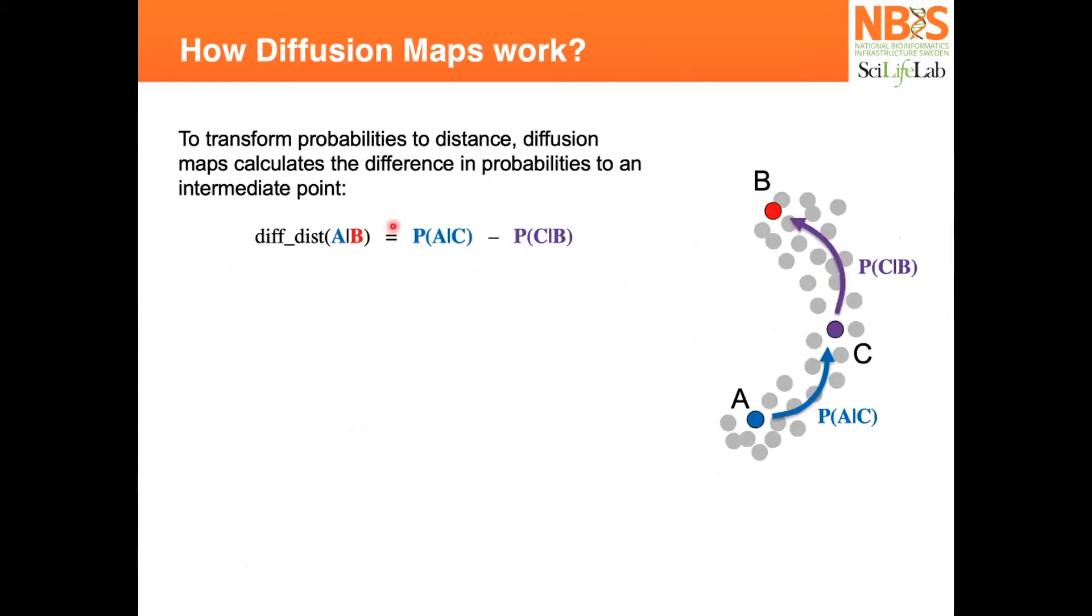The idea of diffusion maps is to transform these probabilities of going from one point to another, connecting those points in a line, and transform those probabilities into distance. So the distance between points A and B in this graph...